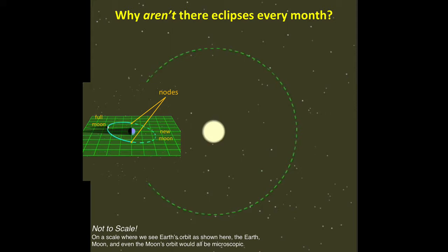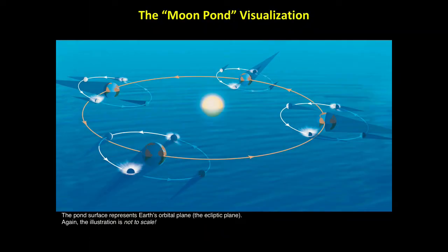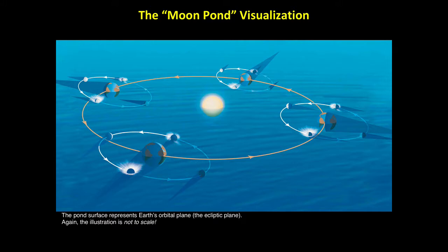A good way to visualize the three-dimensional nature of these orbits is to imagine Earth's orbit on the surface of a pond, so that the moon's orbit crosses through the surface. Here, we show the moon's orbit in four different positions over the course of a year. Now the nodes are the points at which the moon splashes into or out of the water on each orbit, and if you connect them with a line, you'll see that this line keeps approximately the same orientation throughout the year.